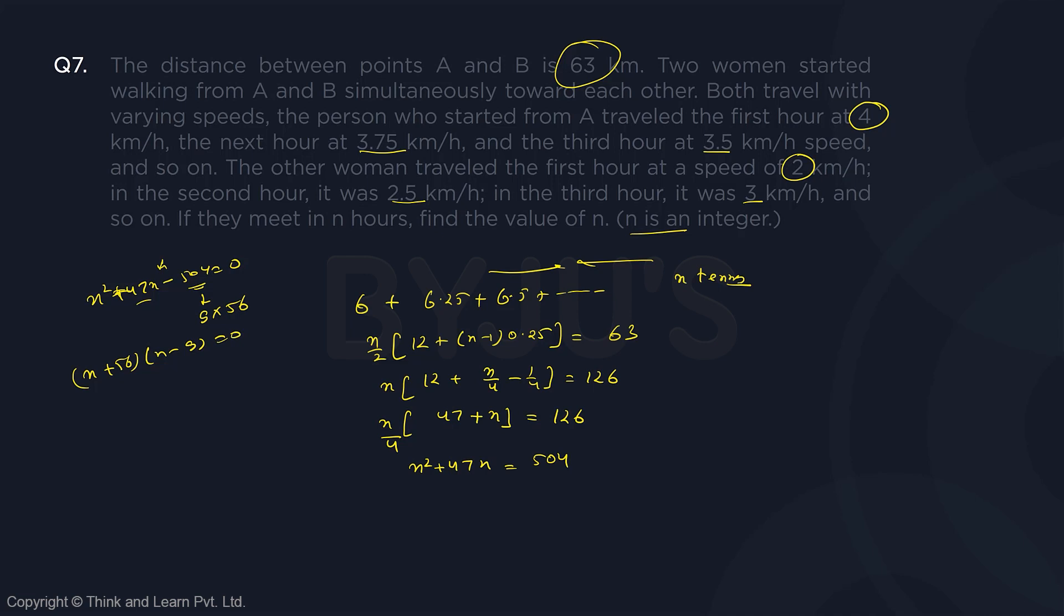N is an integer, a positive integer, so this is not possible, this cannot be 0, so n equal to 9. Clear with this, easy question again, should be done in the test.